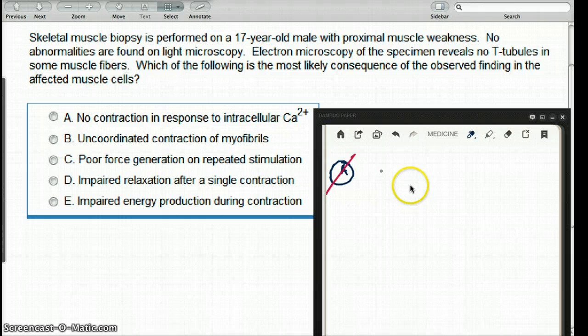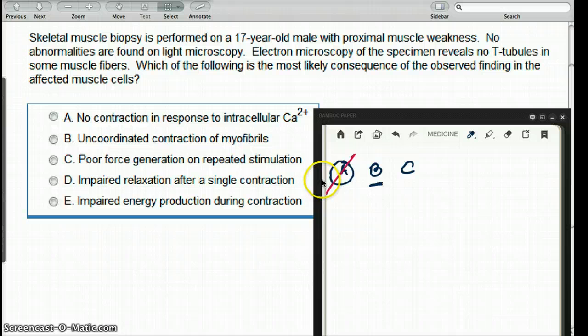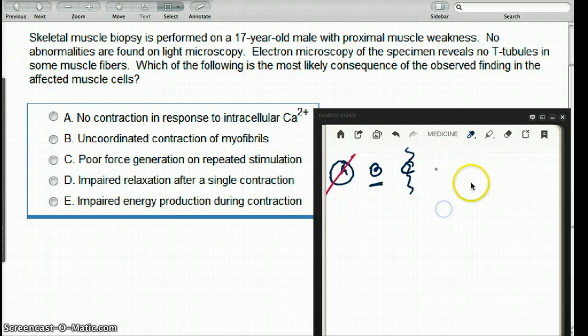Choice B: uncoordinated contraction of myofibrils. Sure, that sounds like a good answer to me. What about choice C? Poor force generation on repeated stimulation. It's not about repeated stimulation. It's about how much calcium is generated in one stimulation. The focus of the question is: one stimulation does how much work? So I don't think that's a possible answer.